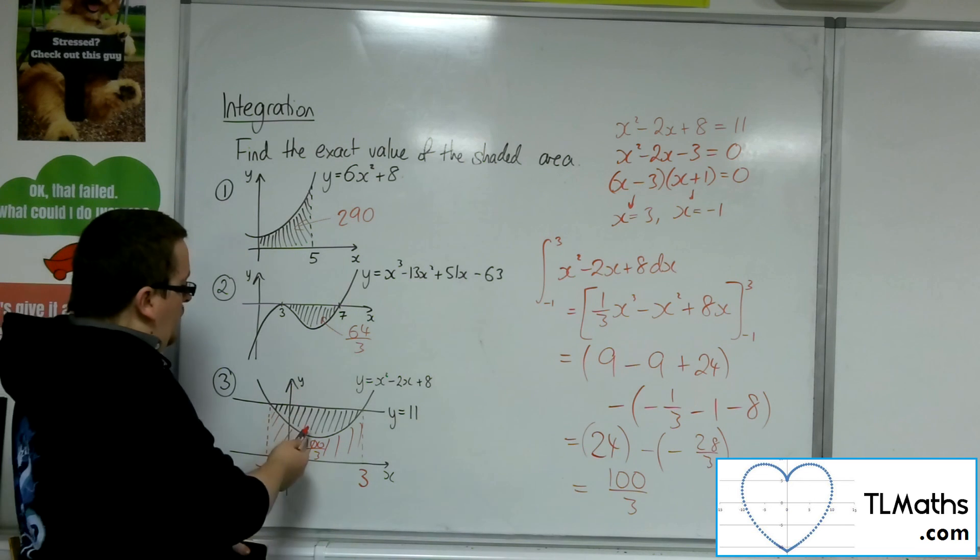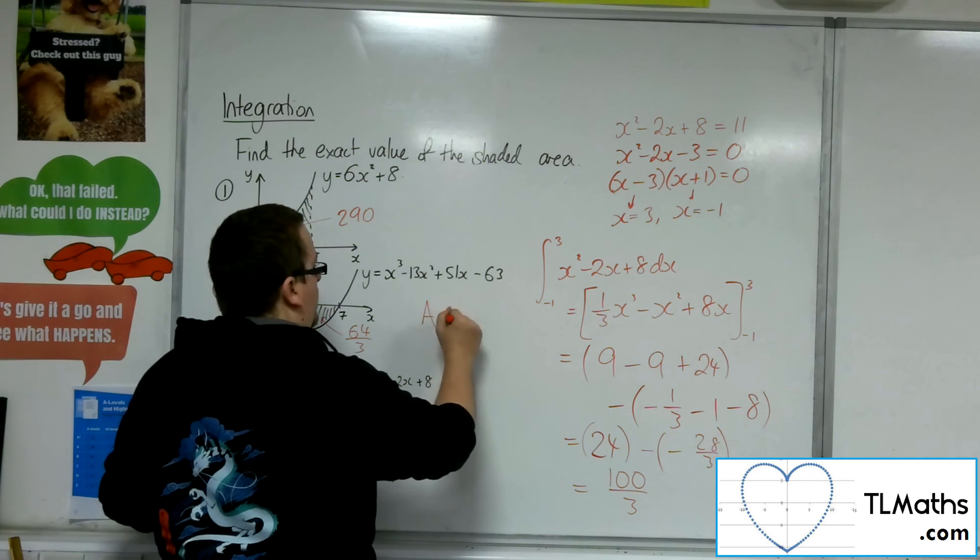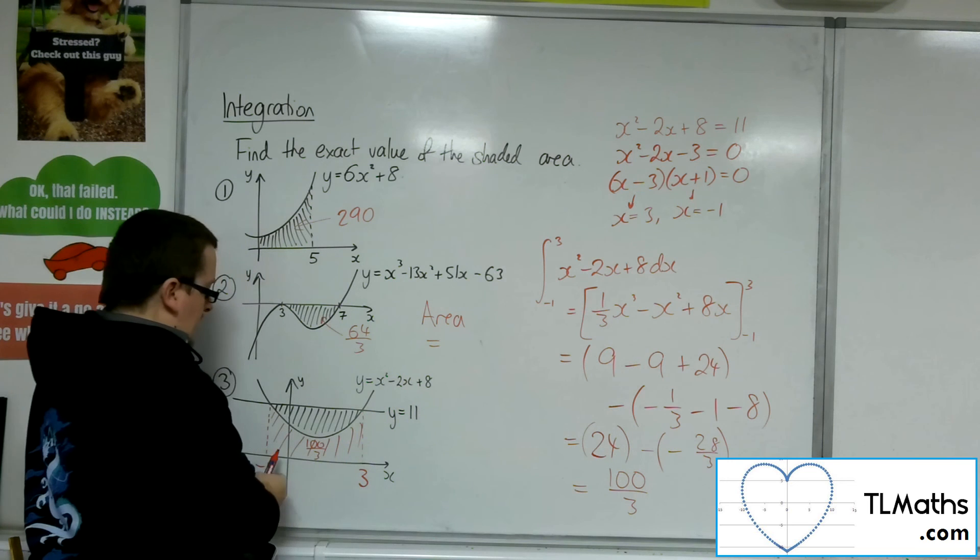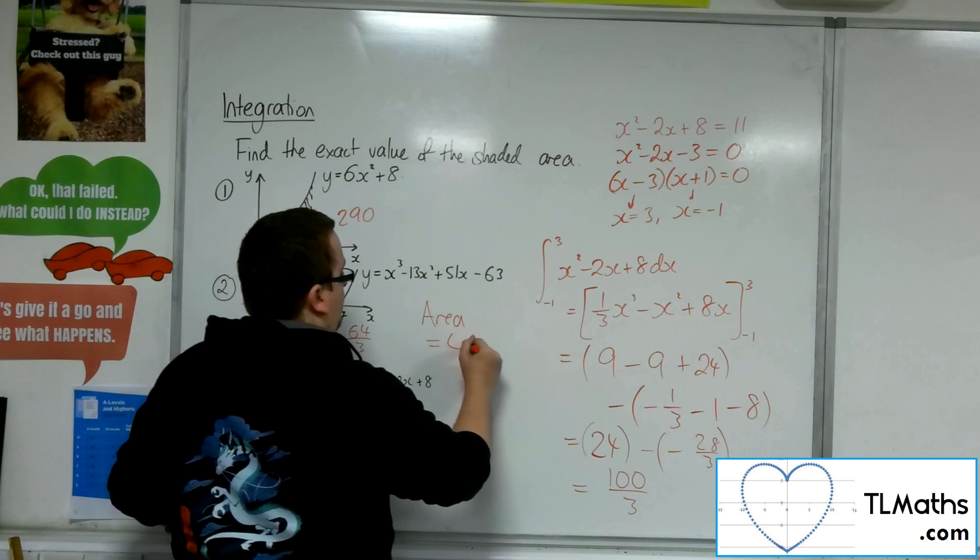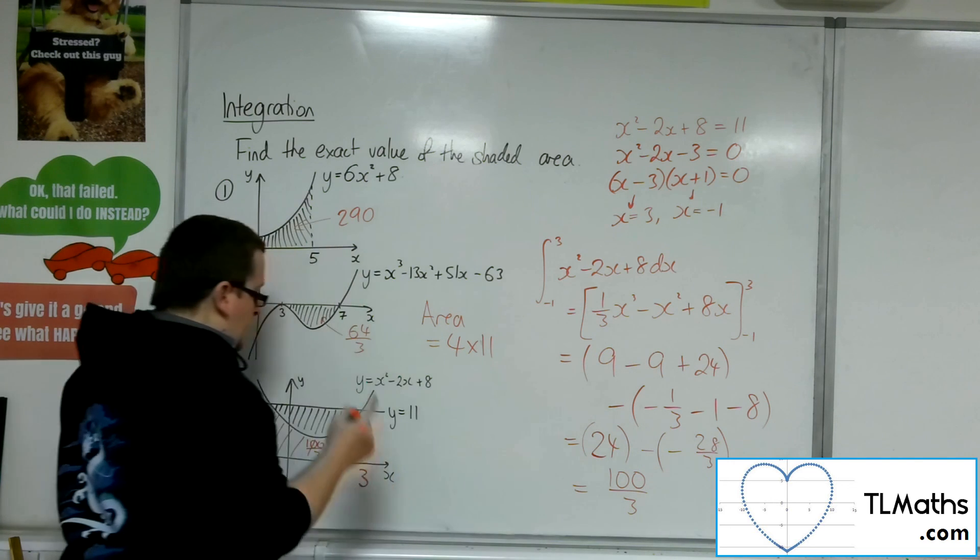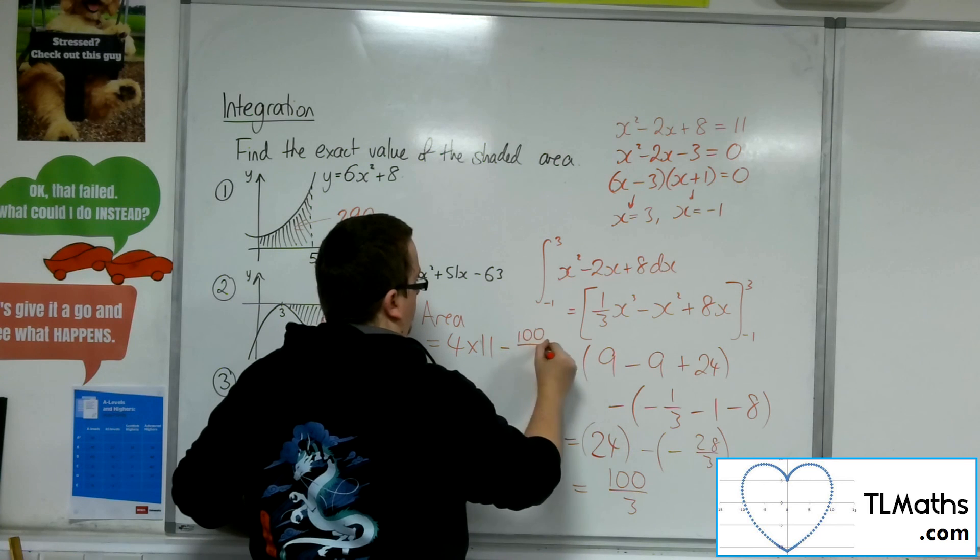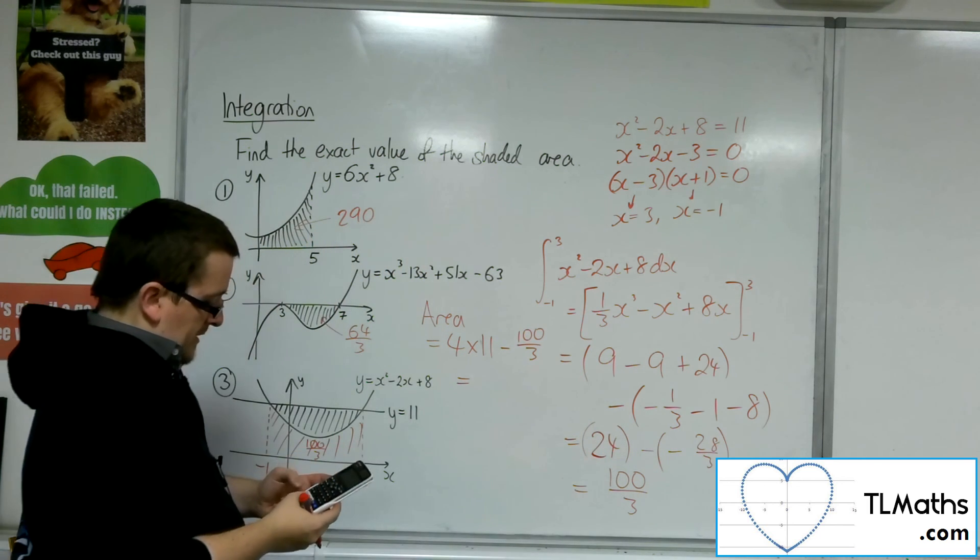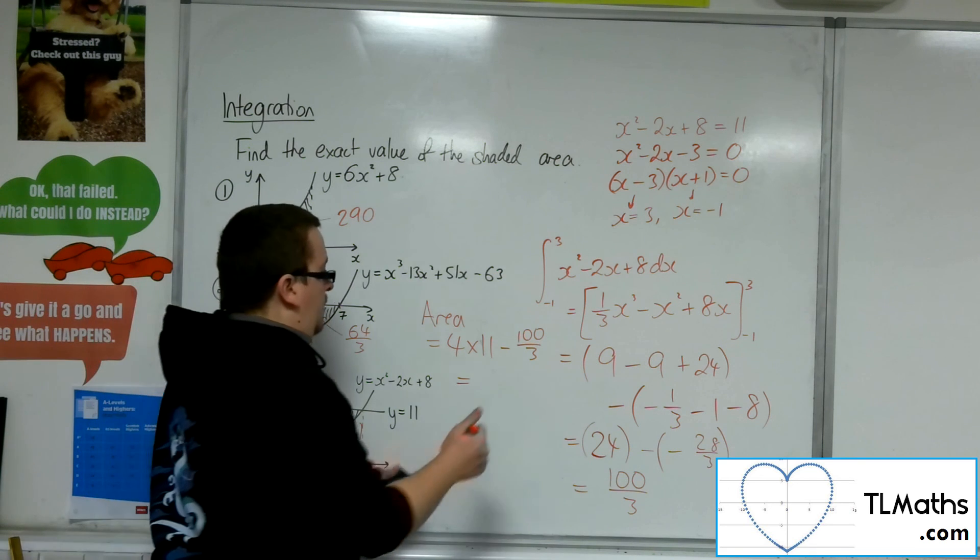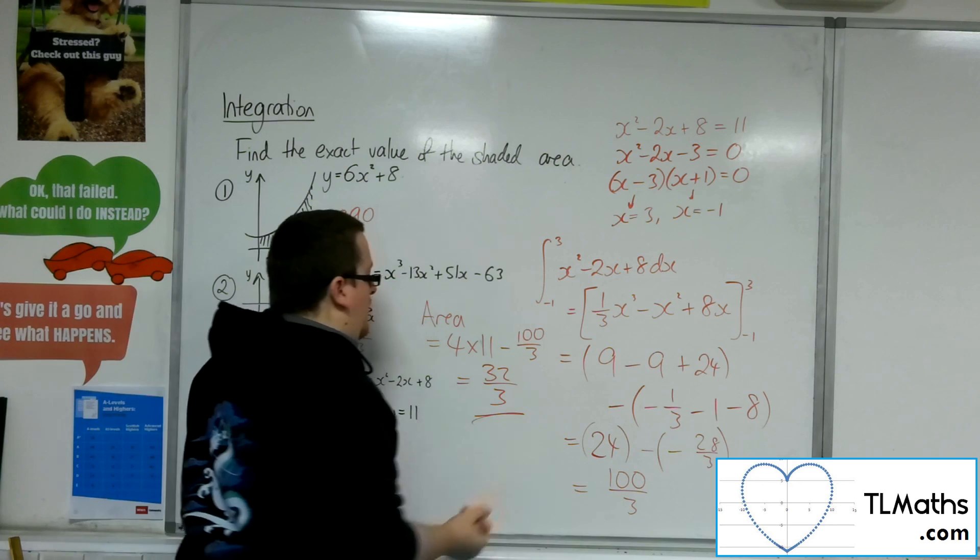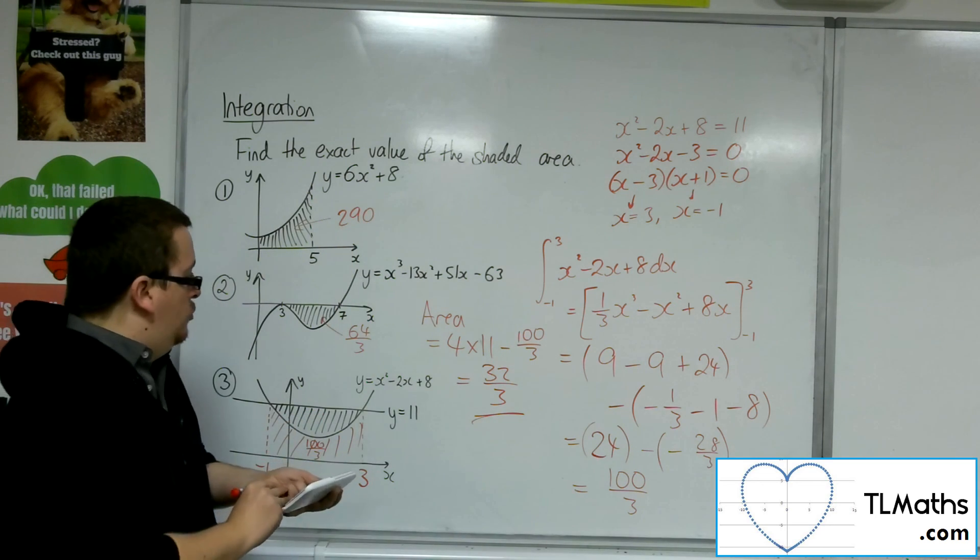So, to work out the shaded region, I need to have the area of that rectangle. The area that I want is equal to the area of this rectangle, which is 4 wide and a height of 11. So, 4 lots of 11. And then take away that area I've just found. So, 44 take away 100 over 3 is 32 thirds. And that is the shaded region there. That's the area of the shaded region.